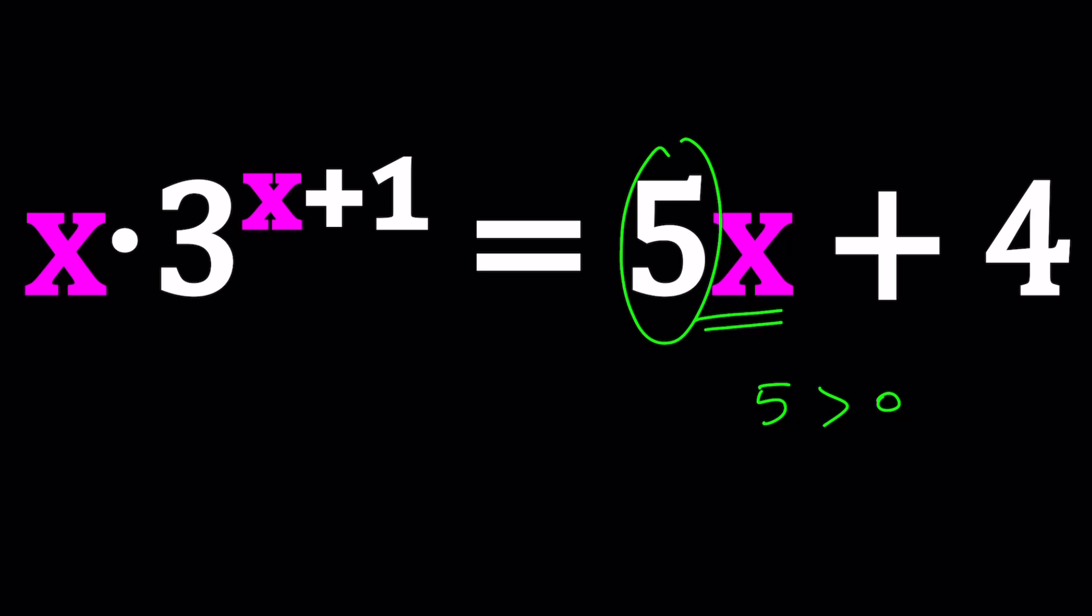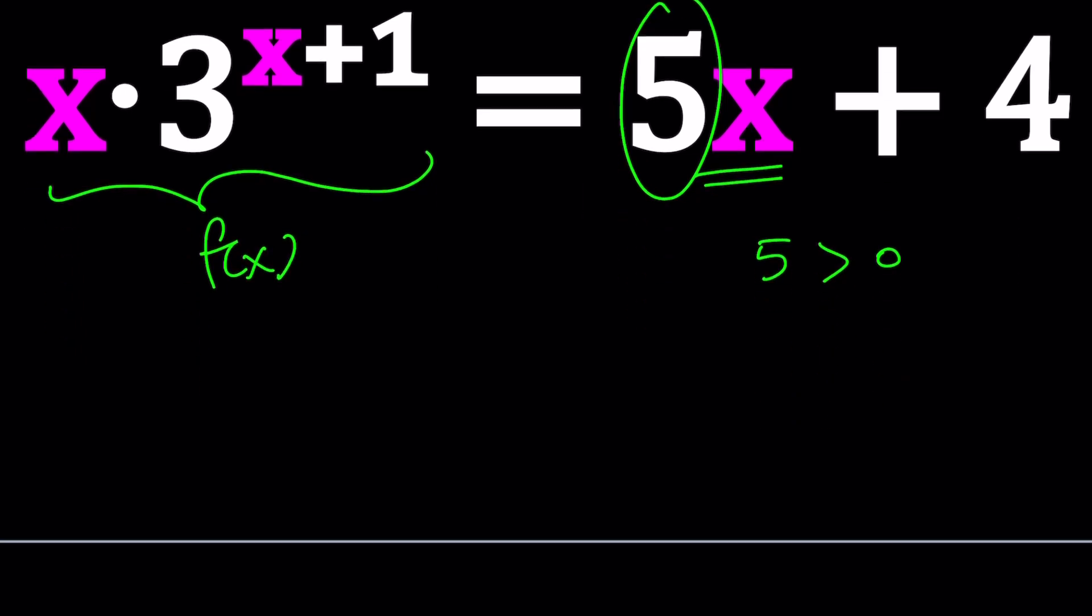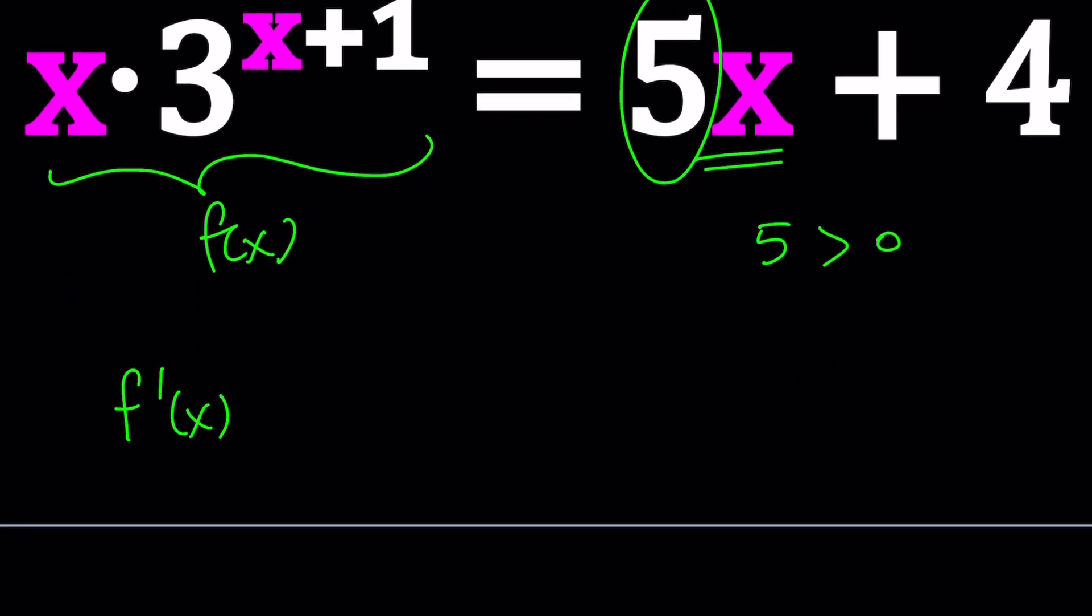Now, on the left-hand side, we have something more complicated. So if you go ahead and call this f of x, you can go ahead and differentiate it, and write this as a product rule. Tells you derivative of x times the second function, plus the derivative of 3 to the power x plus 1. How do you differentiate a to the power something? Well, first of all, you write the same thing,